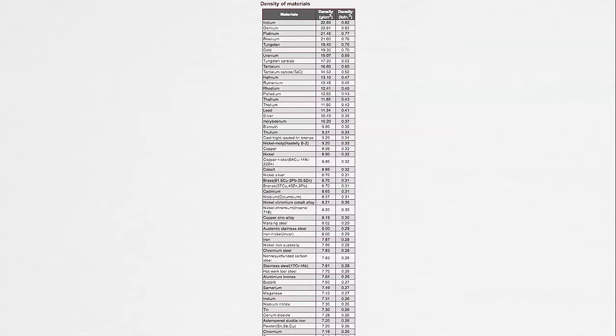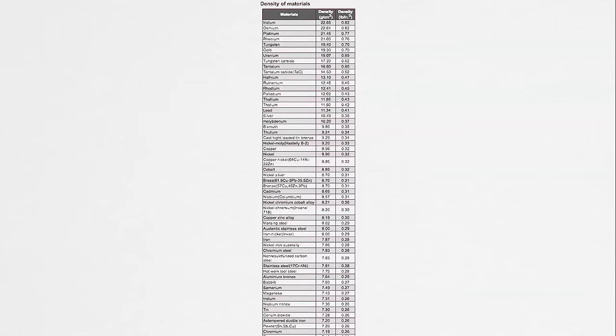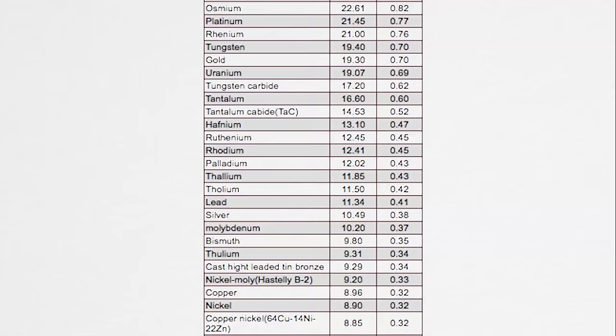You can tell that they're a lot bigger than the platinum iridium prototypes and that's because of the relative difference in density. The density of stainless steel is about eight grams per cubic centimeter whereas the density of platinum iridium is about 21.5 grams per cubic centimeter. There's almost a three times difference in density which tells you why this is so much bigger in volume.